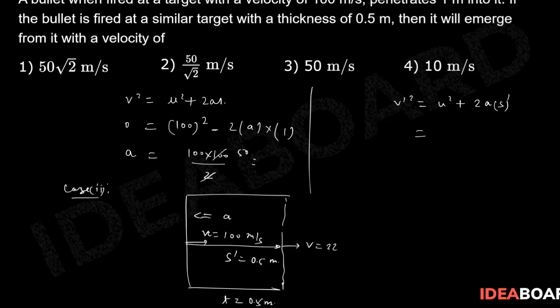So V' will be given by √(U² - 2AS'). This is minus A because we are already applying this as retardation. So directly I can put in this formula U² - 2AS.